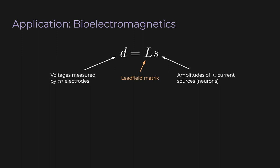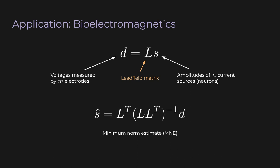The lead field matrix transforms the currents produced by different neurons into the voltages measured in the EEG. Typically, you only have a few dozen or at most a few hundred different electrodes, so L has at most a few hundred rows. But the vector S could have a huge number of elements — millions of neurons or clusters. So the lead field matrix is a very fat matrix. This is perfect for least norm: we multiply D by the pseudo-inverse of L, and there we have our estimate of S — the current amplitudes of the neuron clusters. In bioelectromagnetics, this is called the minimum norm estimate.